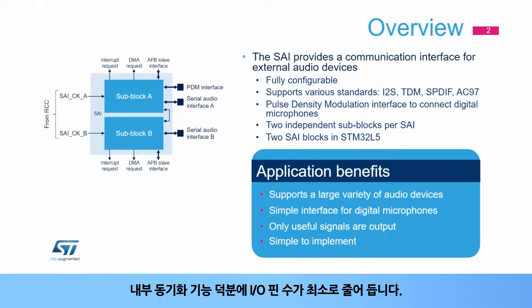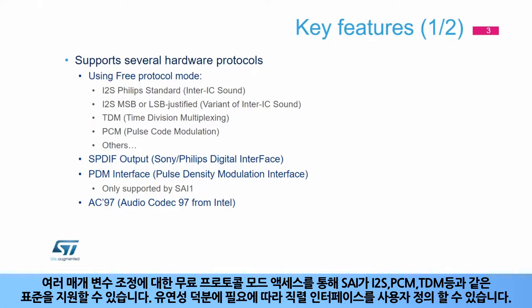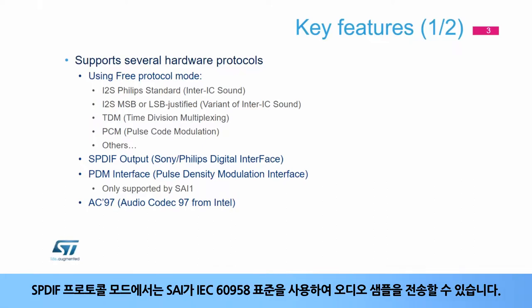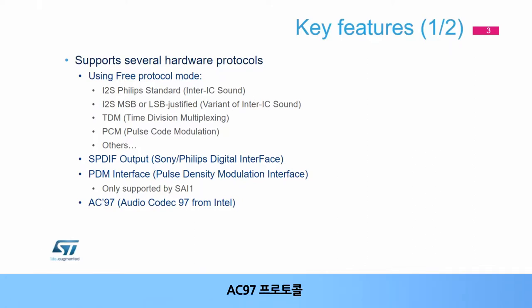Thanks to internal synchronization features, the number of I/O pins is reduced to its minimum. The SAI can be programmed into four different modes. The free protocol mode allows adjustment of several parameters, enabling the SAI to support standards such as I2S, PCM, TDM, etc. Thanks to its flexibility, it is possible to customize the serial interface if needed. The SPDIF protocol mode allows the SAI to transmit audio samples using the IEC 60958 standard. The PDM interface mode allows the SAI to connect up to six digital microphones for beamforming or simple speech capture applications. This mode is only supported by SAI1. The fourth mode is the AC97 protocol.